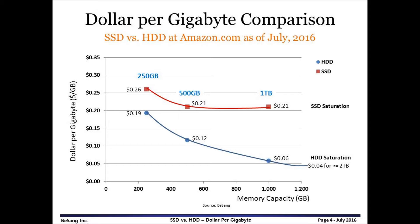Here are some interesting observations. Dollar per gigabyte goes down gradually from low to high memory capacity. I think components such as SSD controller, HDD motor, and DRAM buffer may play an important role in the price structure of low capacity storage devices.